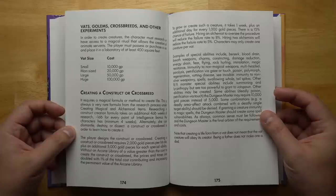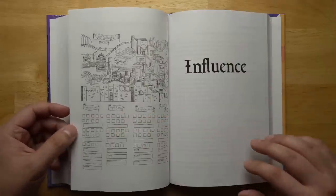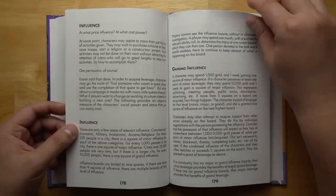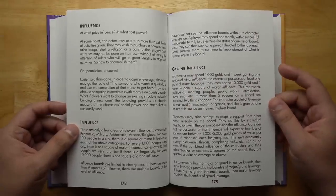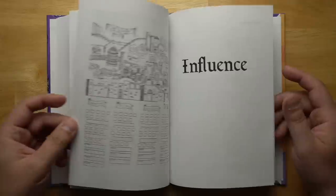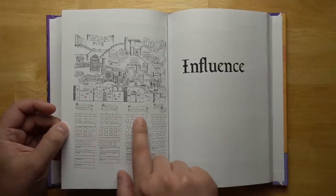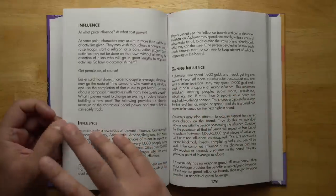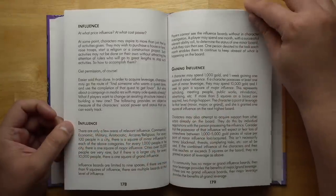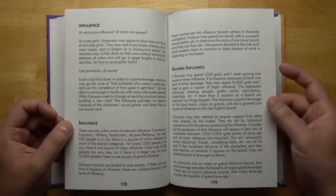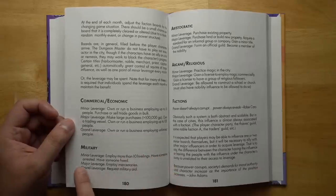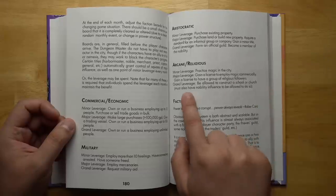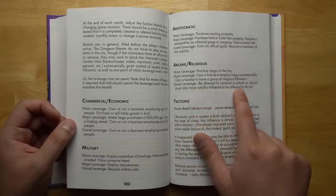A section on vats, golems, crossbreeds, and other experiments if you want to start making your own weird hybrid animals. And then we get to the section on influence. This is an abstract system for building up a level of influence in a city with different types of forces. For example, the commercial forces, military, aristocratic, or arcane slash religious forces. You can fill in these little boxes as you gain more influence, and then you can spend that influence in order to affect change.